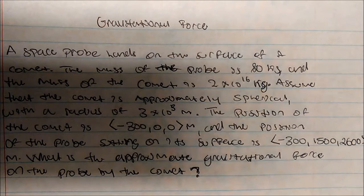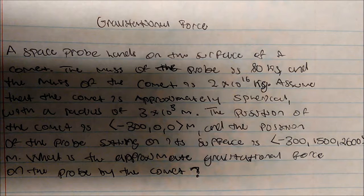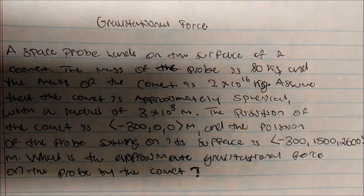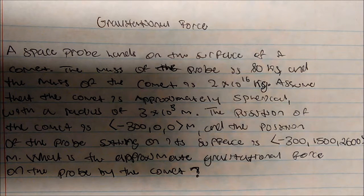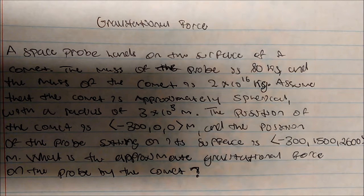We're going to talk about calculating the gravitational force and solving the problem. I have this question here: a space probe lands on the surface of a comet. The mass of the probe is about 80 kilograms, and the mass of the comet is about 2 times 10 to the 16 kilograms. Assume that the comet is approximately spherical with a radius of 3 times 10 to the 3 meters.